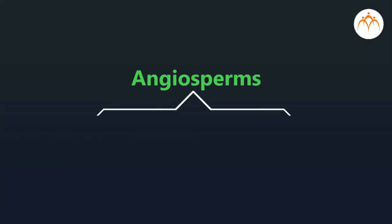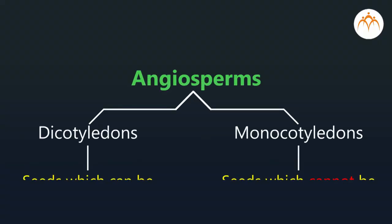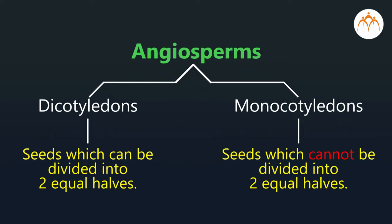So, the seeds which can be divided into two halves are known as dicotyledons, and the others are monocotyledons. Thus, we can further divide angiosperms into dicotyledons (dicots) or monocotyledons (monocots). Now, go around your garden or check these characteristics of plants in your terrace garden. Keep noting down different characteristics of plants whenever you go for a vacation, whether it is a trek or a fun trip.